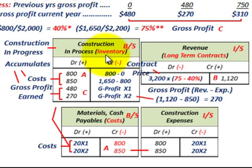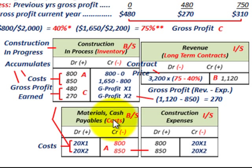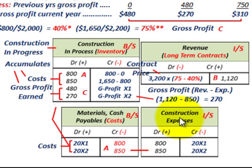Along with this Construction in Progress account, we're also going to have a revenue account on our income statement for this long-term contract. And we'll also have accounts for materials, cash, and payables — the costs on this contract. You're going to credit out and remove all these contract costs, moving them into construction expenses on your income statement and also into your Construction in Progress account.